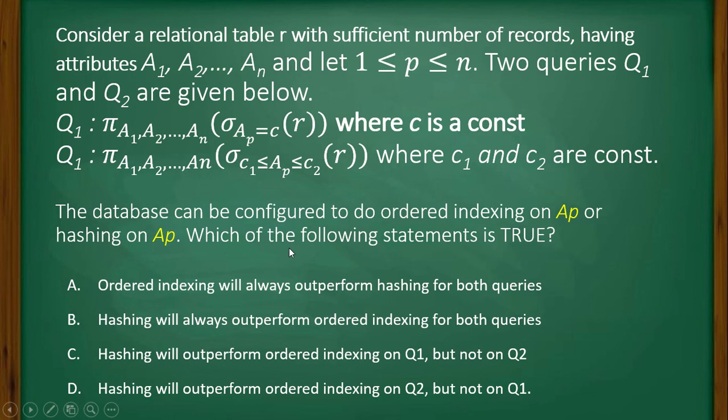In query one there is no chance of having multiple values; only one value we will get for attribute Ap. In this case, ordered indexing does not make any sense because only one value we will have, but we can do hashing. Hashing is better when we will have only one value.